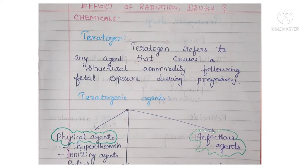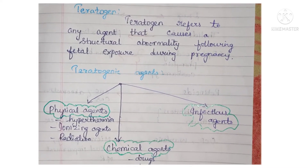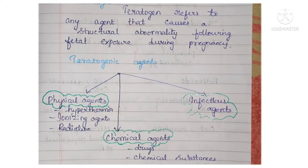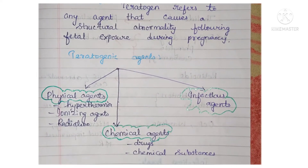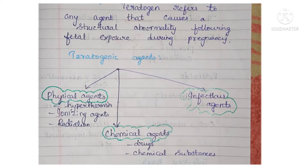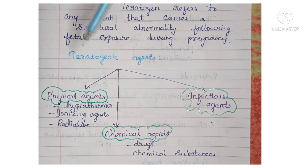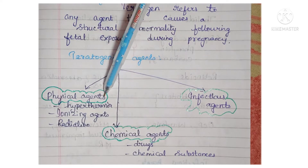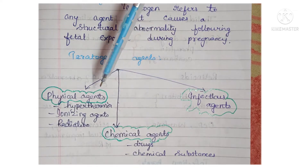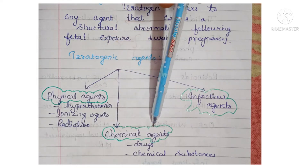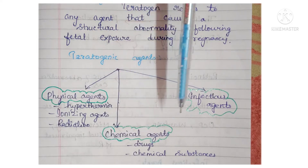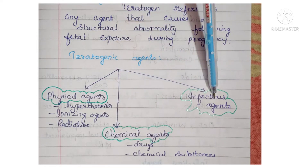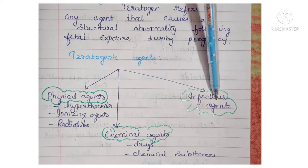Next, moving on to teratogenic agents. We have so many agents; the main classification is physical agents, chemical agents, and infectious agents.